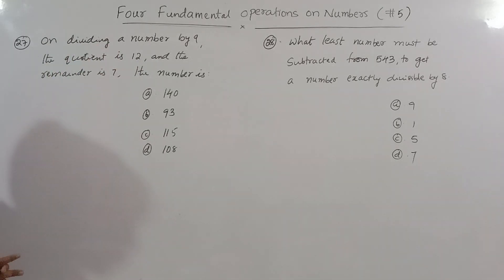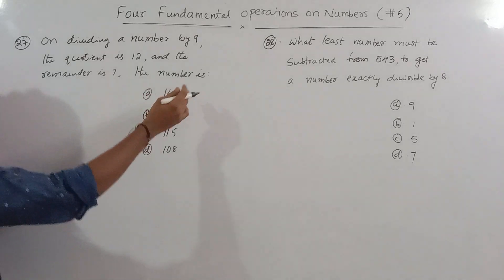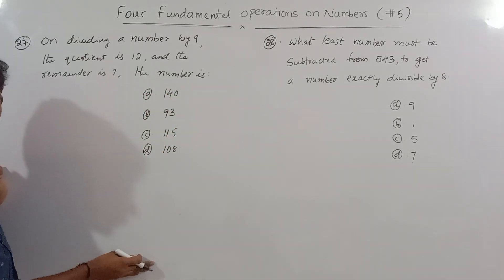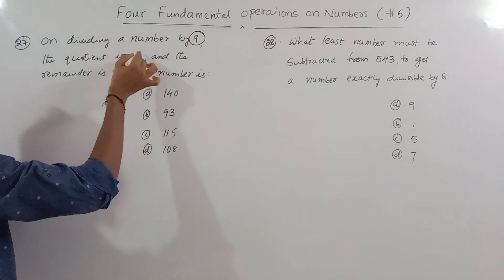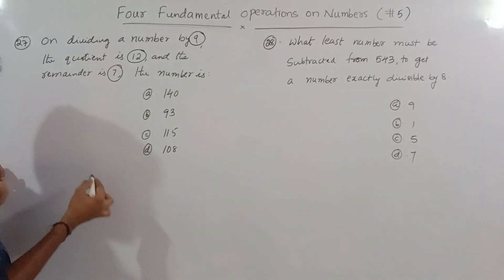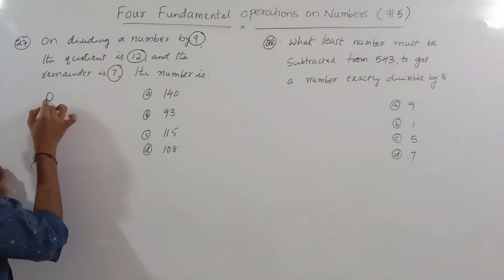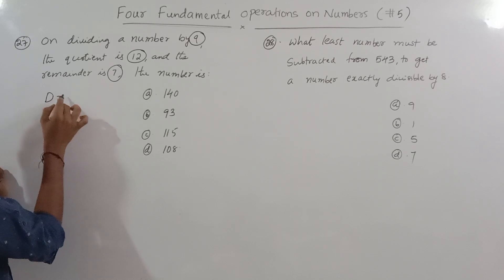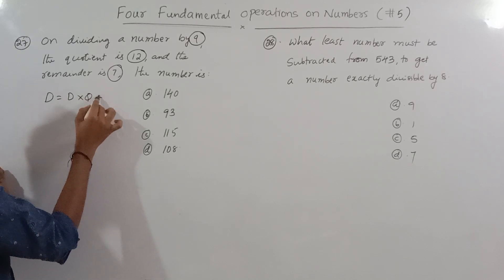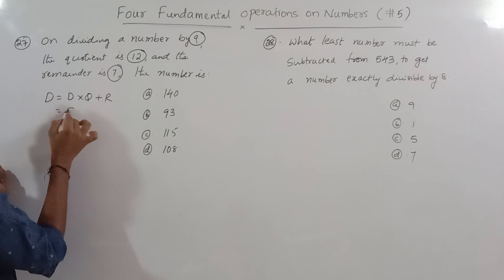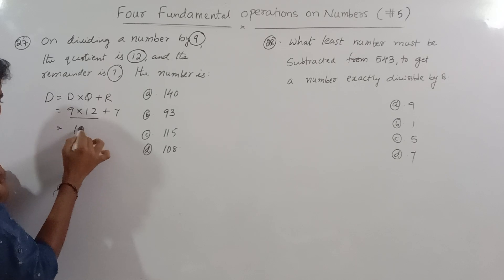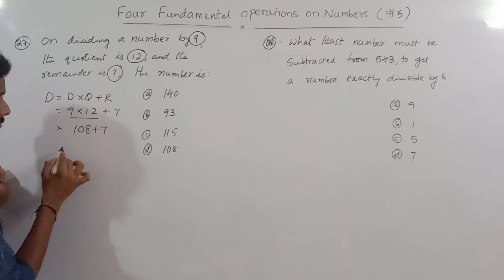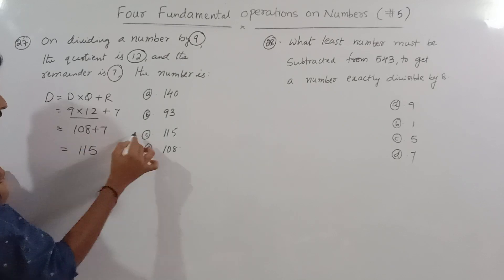On dividing a number by 9, the quotient is 12 and the remainder is 7. Then the number is? We use the formula: dividend equals divisor into quotient plus remainder. Divisor is 9, quotient is 12, remainder is 7. So 9 into 12 is 108, plus 7 is 115. That is our correct answer.